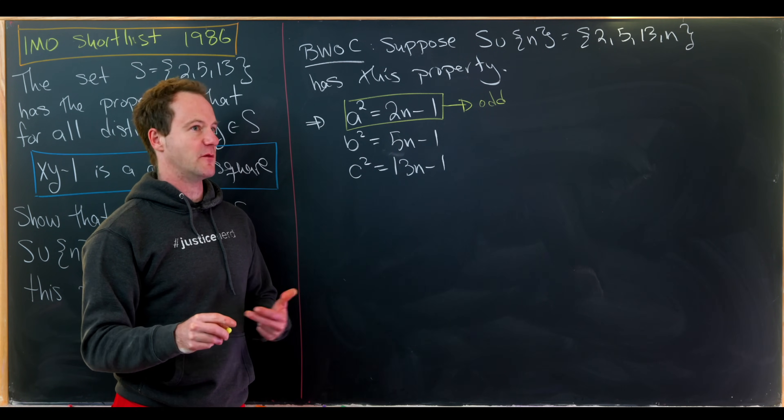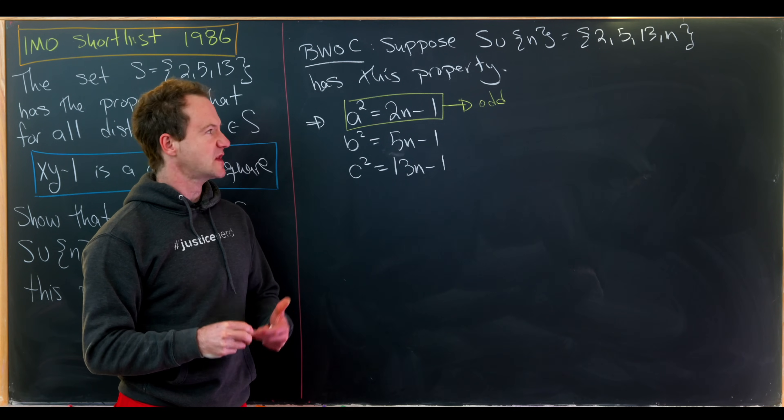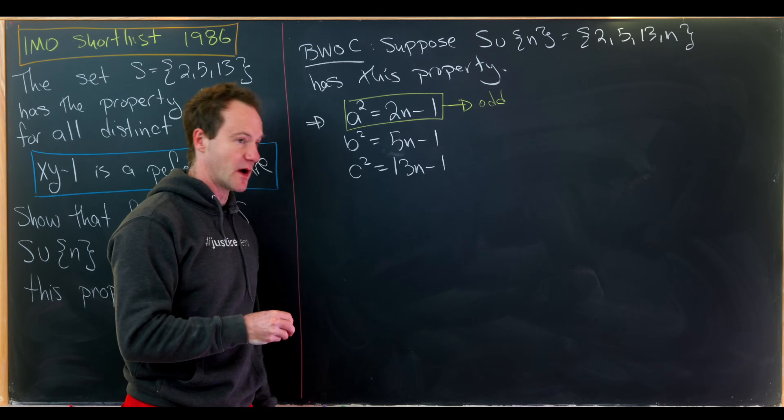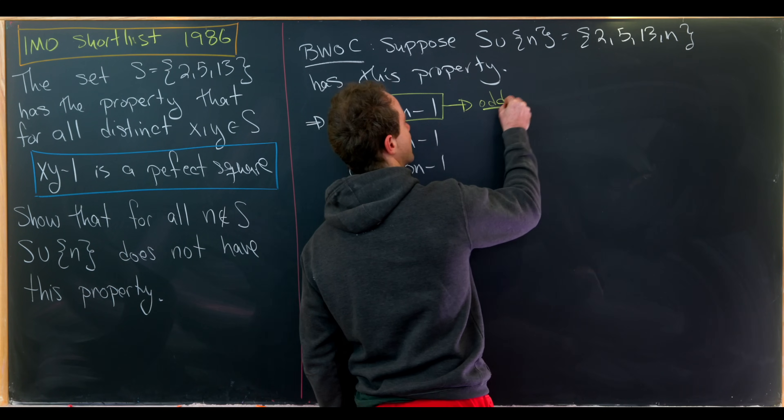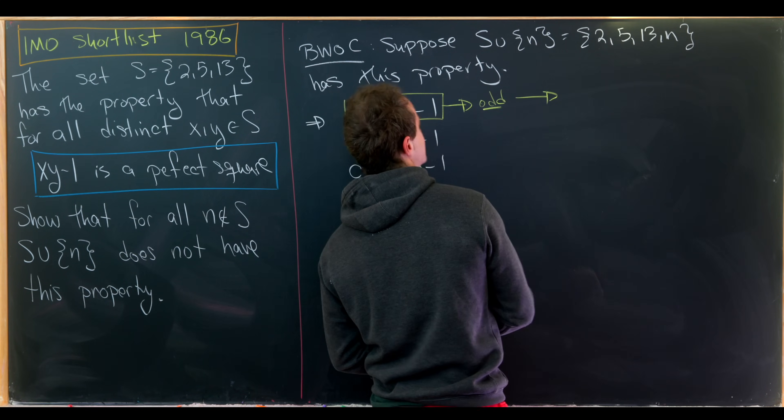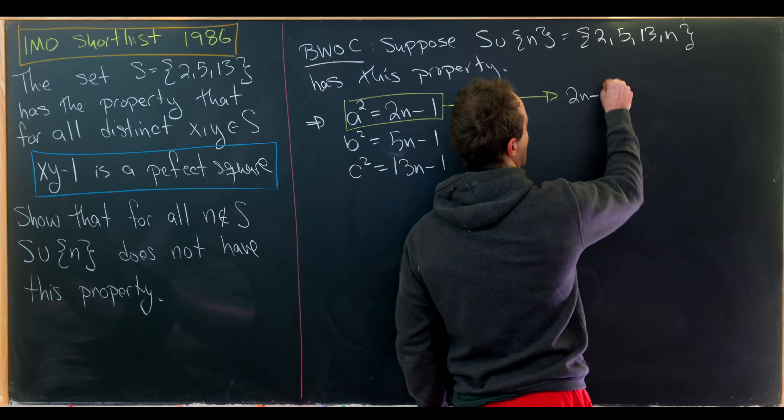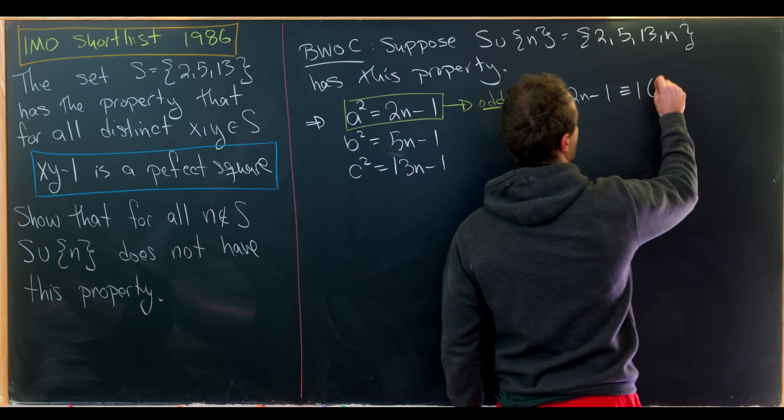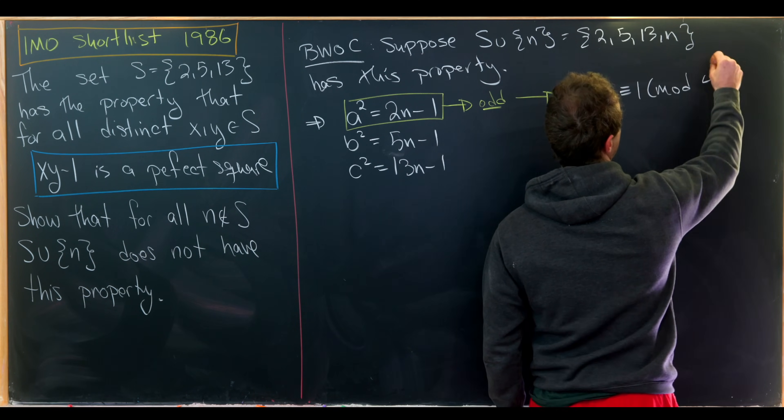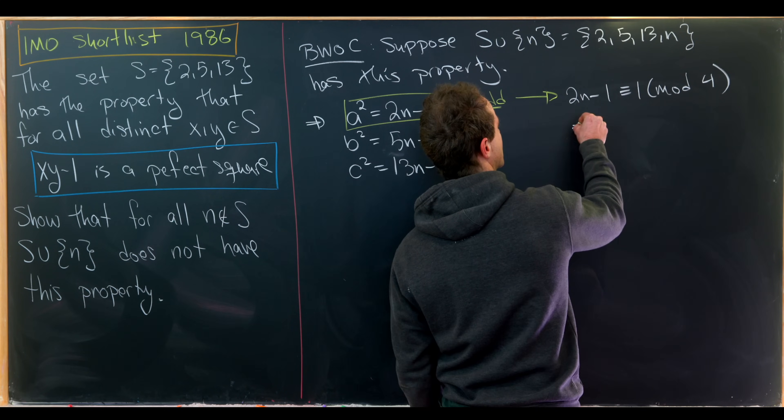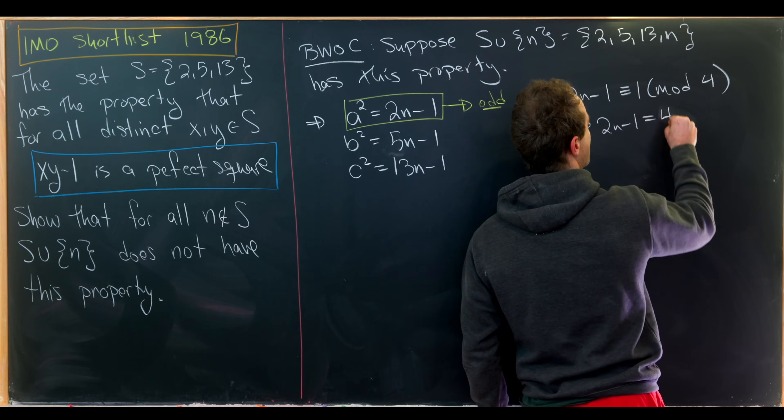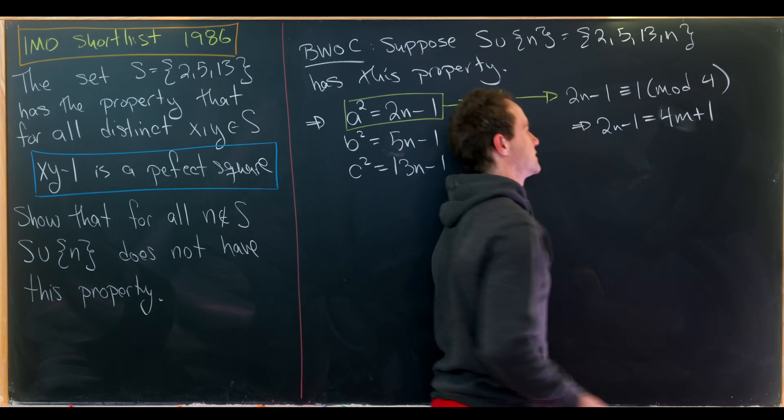So since it's odd and a perfect square, it must be congruent to 1 mod 4. So it's a basic fact from elementary number theory that all odd perfect squares are congruent to 1 mod 4. So that means we can write 2n minus 1 is congruent to 1 modulo 4. But what does it mean to be congruent to 1 mod 4? It means you're of the form 4m plus 1.